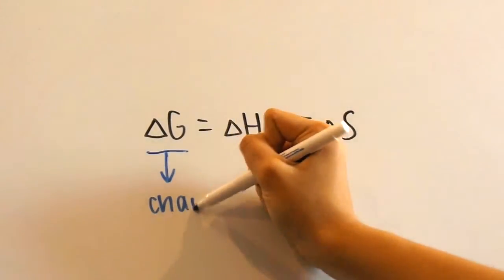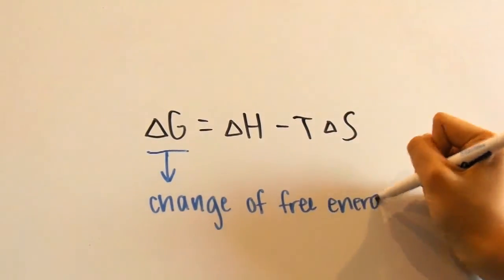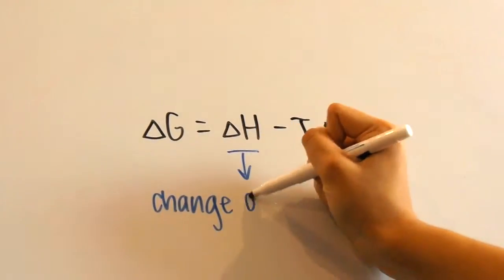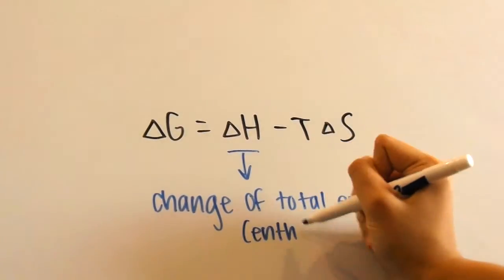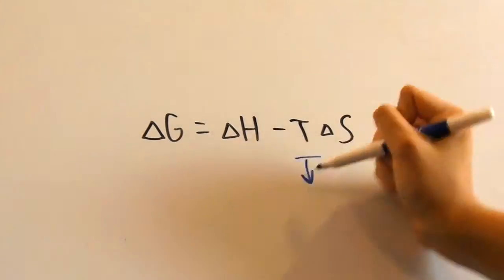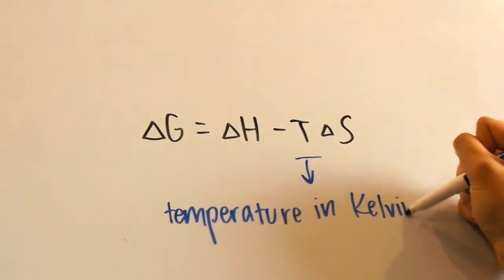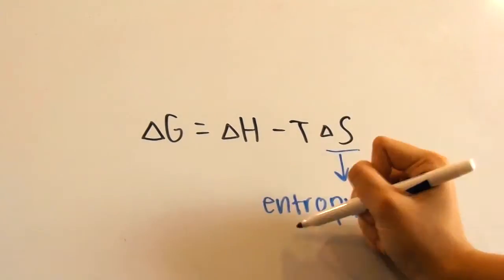So the change of free energy is denoted by delta G over here. Delta H stands for the change of total energy or enthalpy, T stands for temperature in Kelvin, and delta S is the change in the system's entropy.